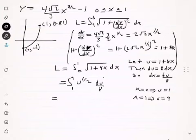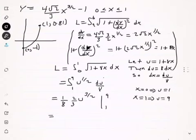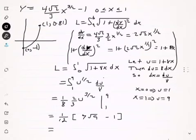We take the 1/8 out and integrate, getting u to the 3/2 times 2/3, as u goes from 1 to 9. This gives us 1 over 12 times — when you plug in 9 you get 9 times the square root of 9, and when you plug in 1 you get 1. Putting it all together you get 13 over 6. So that is the length of that curve from 0 to 1.